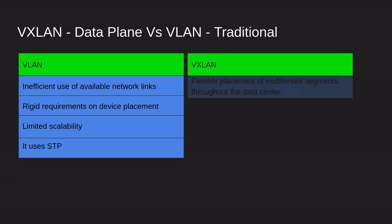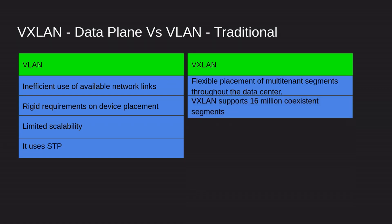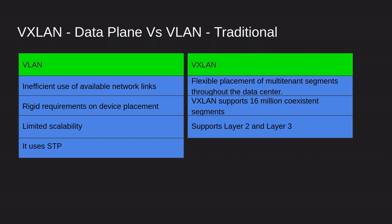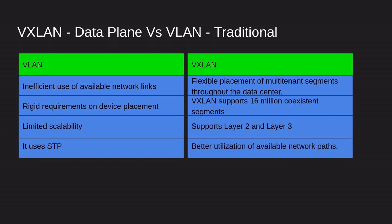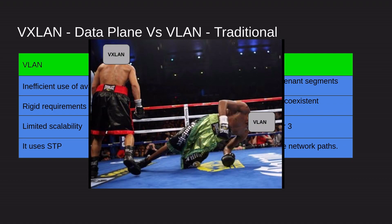With VXLAN, we get flexible placement of multi-tenant segments through the data center — you can place them wherever you want. VXLAN supports over 60 million coexisting segments, which is far more than traditional VLAN. It supports both Layer 2 and Layer 3, and that's why it's used as the data plane in SD Access instead of LISP, which only supports Layer 3. VXLAN also has better utilization of available network paths.